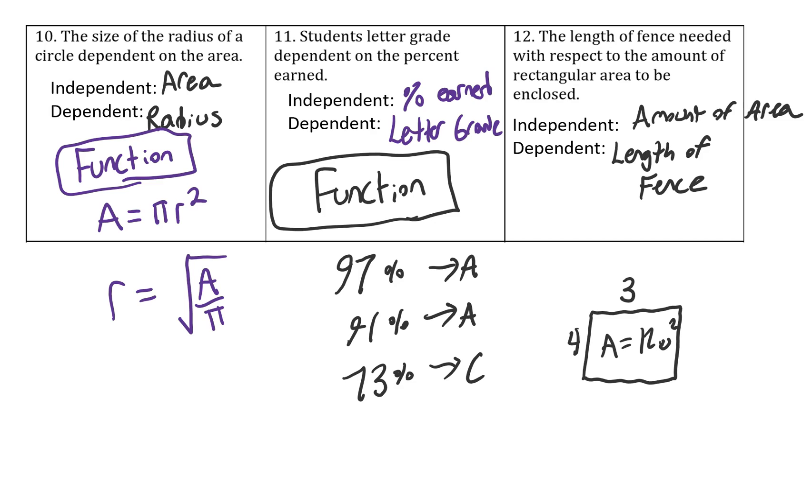And I could also have a six by two fence where the area would be 12 square units. But the length would be six plus six plus two plus two, which is 16 instead of 14.